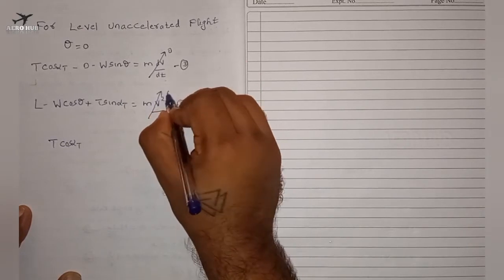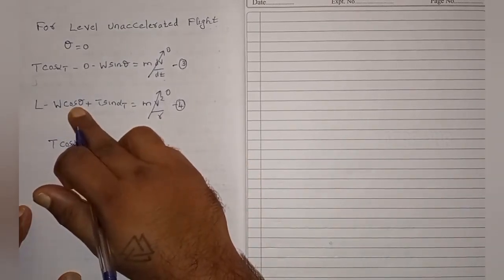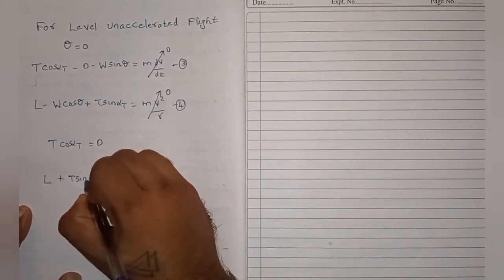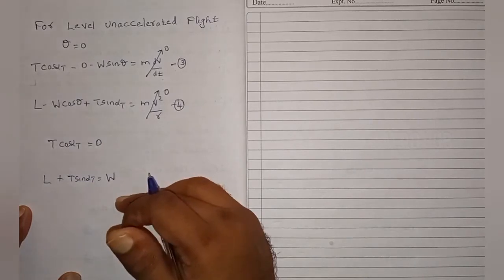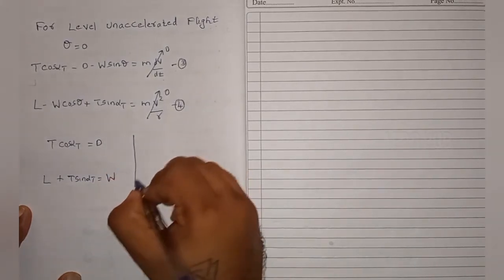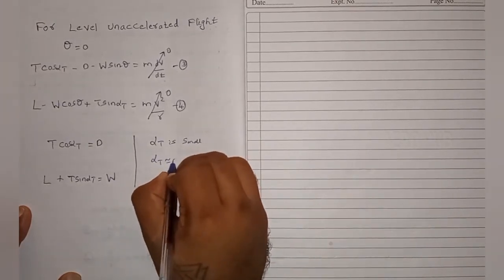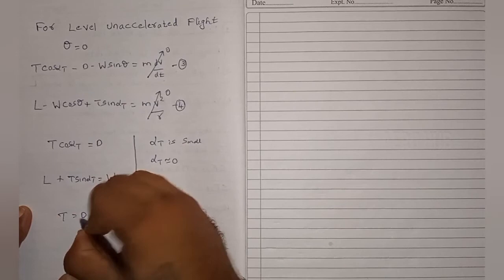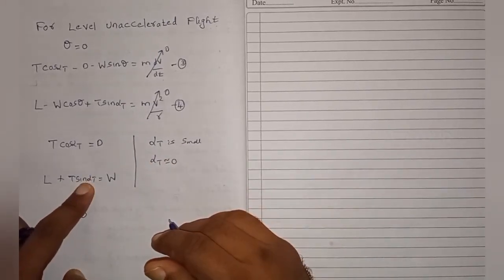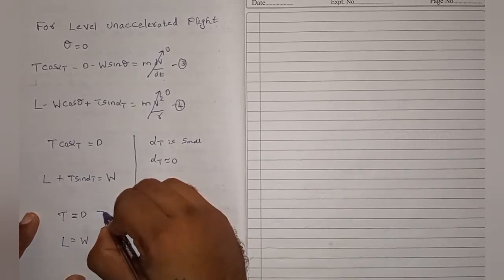Since this is unaccelerated flight, the acceleration term becomes zero, giving us T cos(αt) = D. For equation four, cos(0) equals one, so L plus T sin(αt) equals W. For most airplanes, αt is small — approximately zero — so cos(0) = 1 gives T = D, and sin(0) = 0 gives L = W.